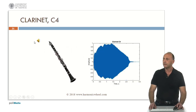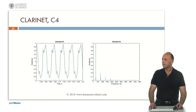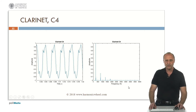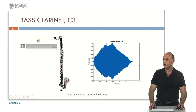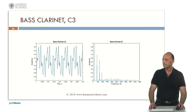The clarinet, C4. In this case, the spectrum only contains odd harmonics, not the even ones. As well as in the bass clarinet, this is C3. Only odd harmonics.